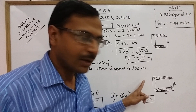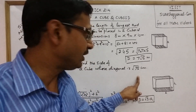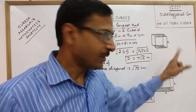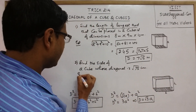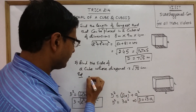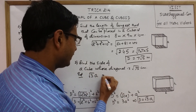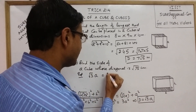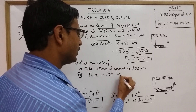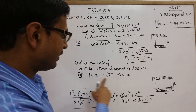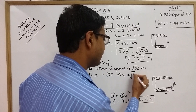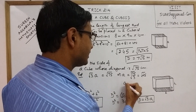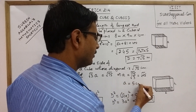The length of the diagonal is given and we need to find the side. If we assume the side as A, the length of the diagonal is √3·A, and this is given as √75. So we equate: √3·A = √75, which gives A = √(75/3) = √25 = 5 centimeters. So the side of the cube is 5 centimeters.